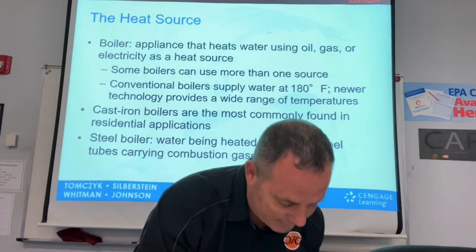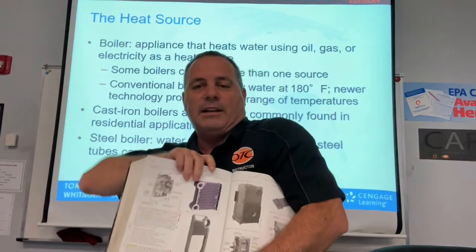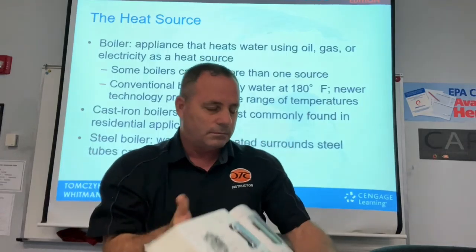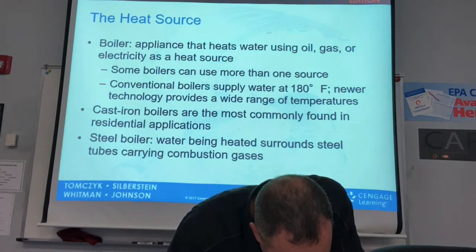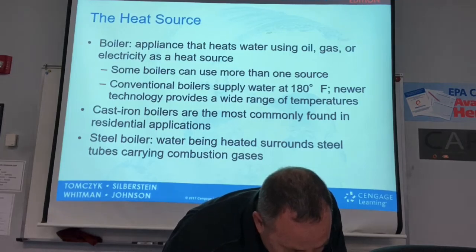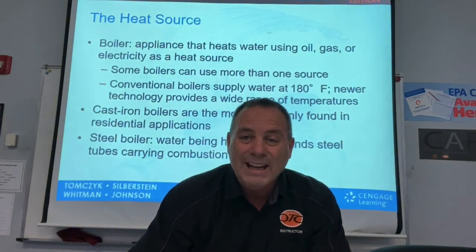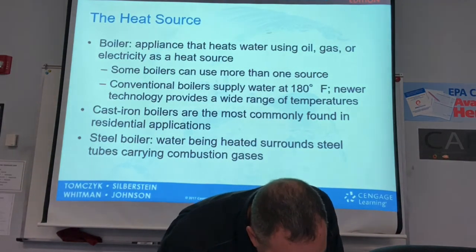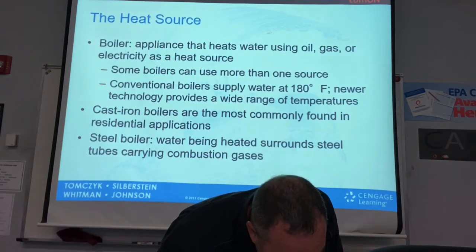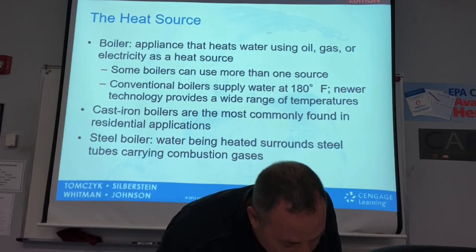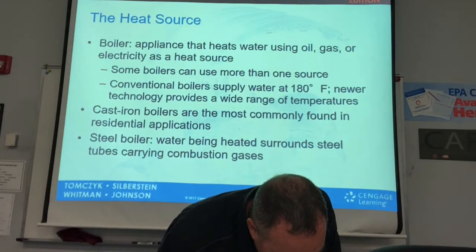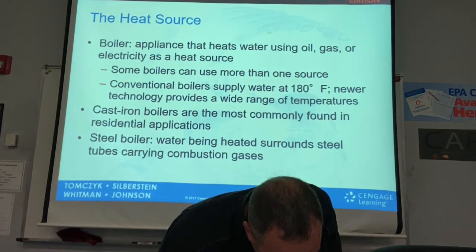On page 972, you can see what a cast iron boiler looks like. These come in dry-base and wet-base types. A dry-base boiler means the area under the combustion chamber is dry — no water is there. In wet-base boilers, the water being heated is located above and below the combustion area.